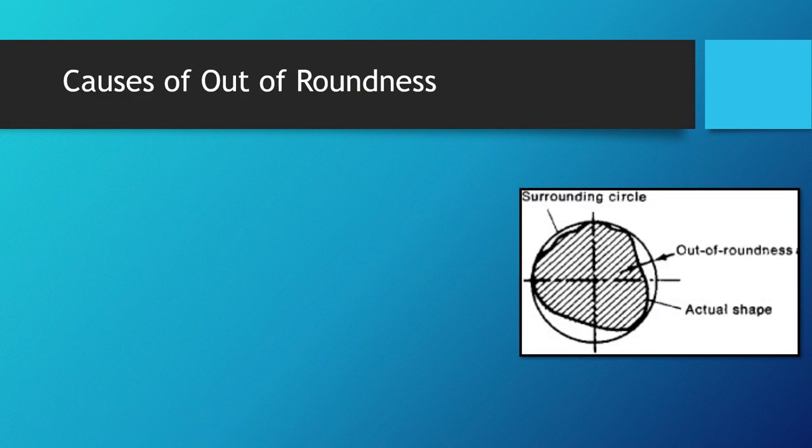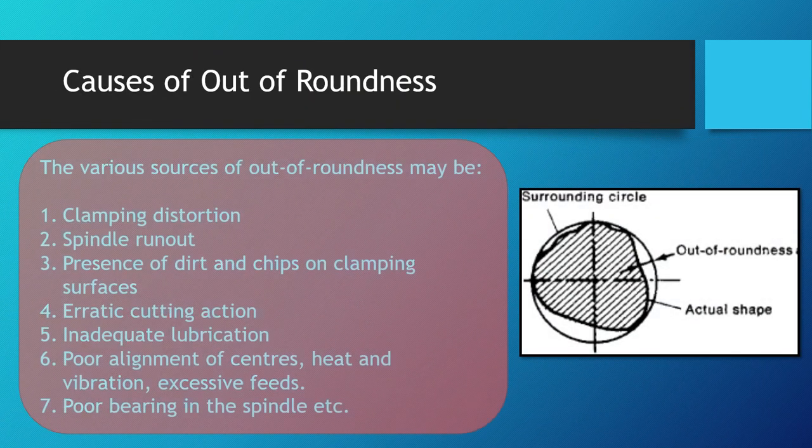Out-of-roundness can be defined as the greatest distance from the actual cross-sectional surface to the surrounding circle of points, as shown in the figure. Out-of-roundness gauges are used to check internal and external cylindrical surfaces.